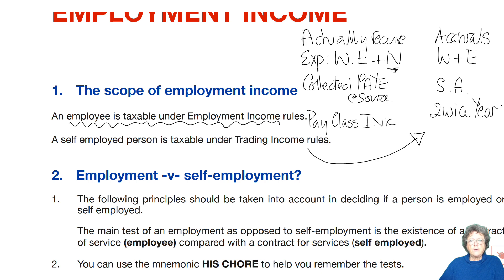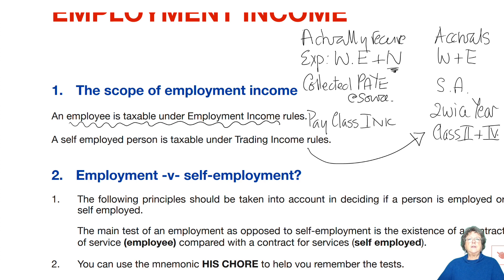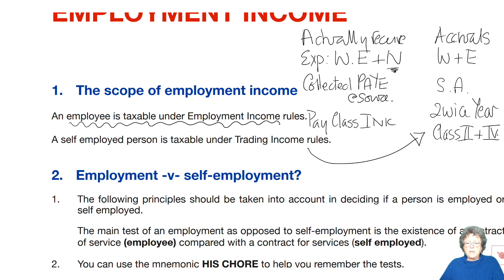So HMRC don't get a regular source of income from the self-employed. You pay Class 2 and Class 4 NIC, which are different to Class 1 national insurance contributions. They pay the same rates of income tax — 20%, 40%, 45% — but it's collected differently. The NI is different, and what you can and can't claim is different.